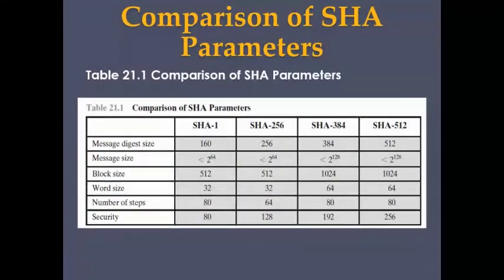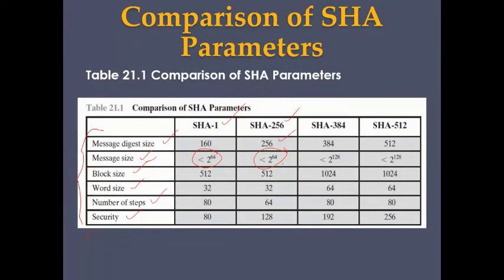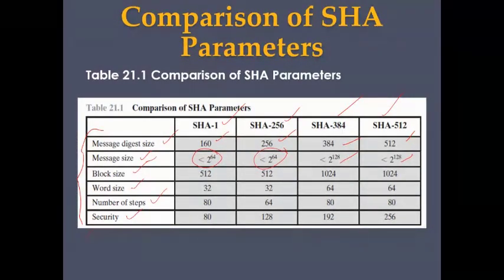A comparison of these SHA versions covers parameters like message digest size, message size, block size, word size, number of steps, and security. For example, SHA-1 works with a message size less than 2^64, while SHA-256 has a much bigger message digest size. This simple table compares SHA-1 through SHA-512 across all these parameters.